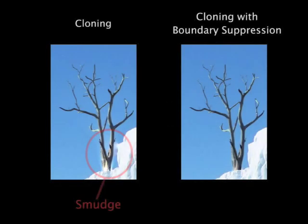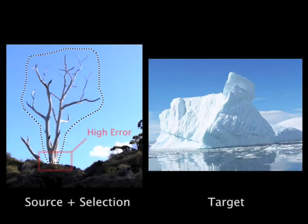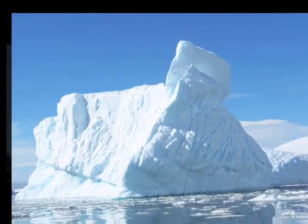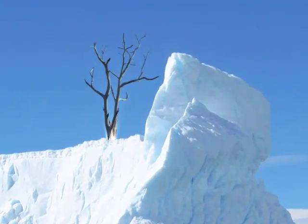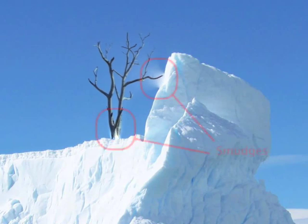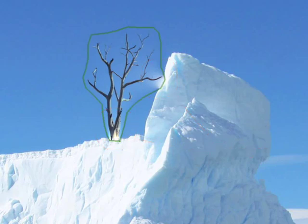Beyond speed, ease of implementation, and a small memory footprint, coordinate-based cloning allows us to deal with common Poisson cloning problems such as smudges near the boundary. When a large error on part of the boundary is unavoidable, we should avoid spreading the error across the region. In our framework, it is easy to construct a membrane that attenuates or ignores such boundary sections, and we let the user indicate them using a simple brush interface.